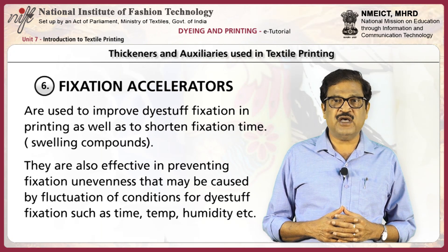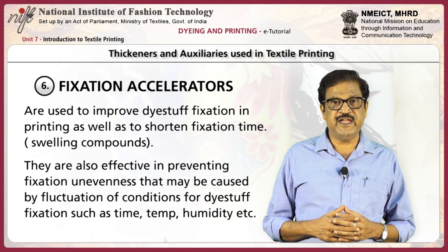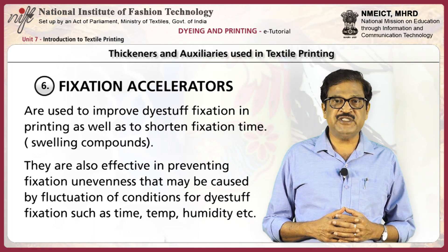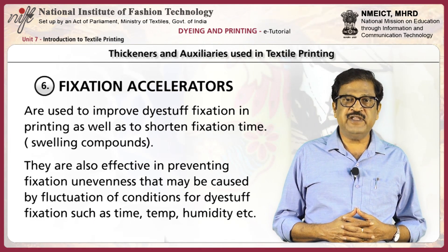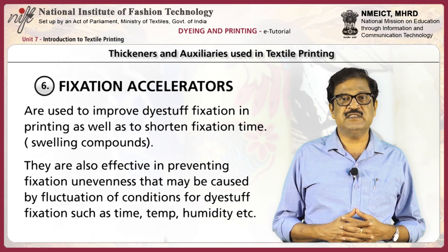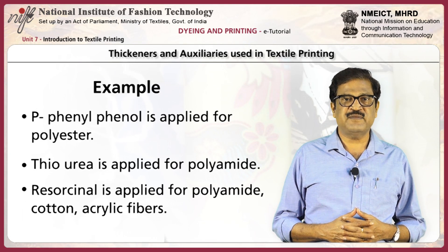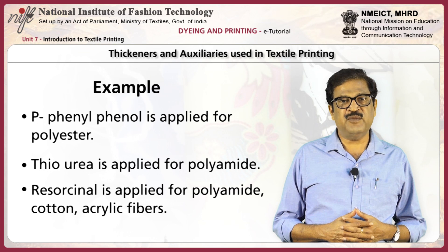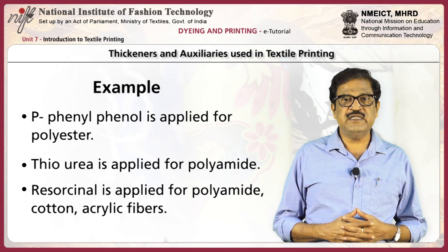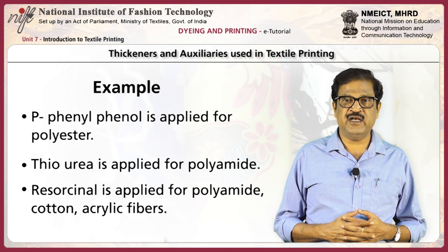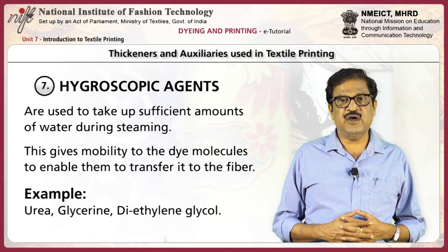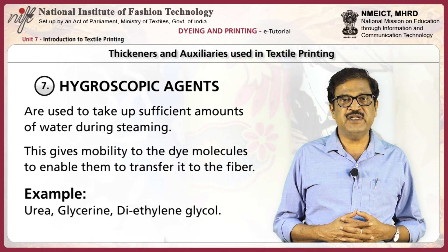Fixation accelerators are used to improve dye stuff fixation in printing as well as to shorten fixation time. They are also effective in preventing fixation unevenness that may be caused by fluctuation of conditions for dye stuff fixation, such as temperature, time and humidity. Examples: p-phenyl phenol is applied for polyester, thiourea is applied for polyamide, and resorcinol is applied for polyamide, cotton and acrylic fibers.